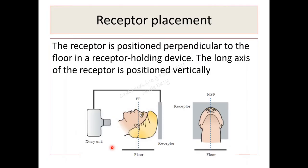In order to obtain this view, the receptor should be positioned perpendicular to the floor in a receptor-holding device. The long axis of the receptor should be placed vertically. Here you can see the receptor is placed perpendicular to the floor.